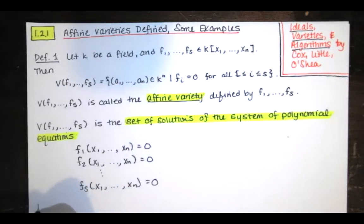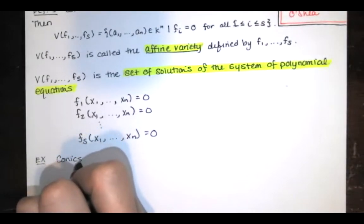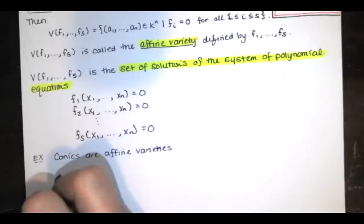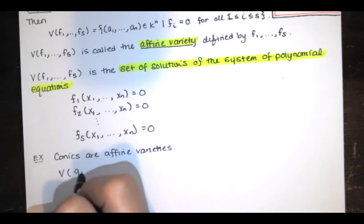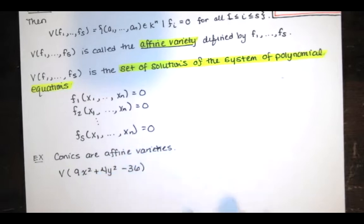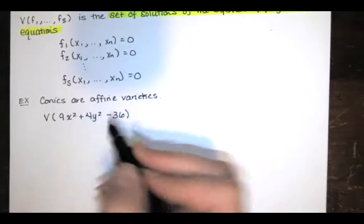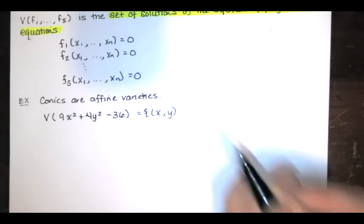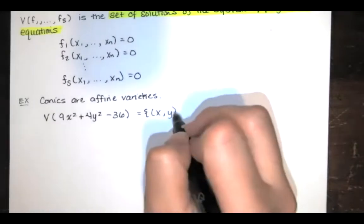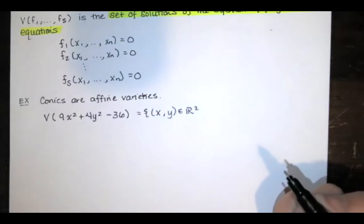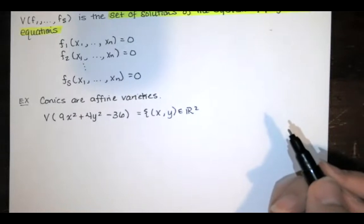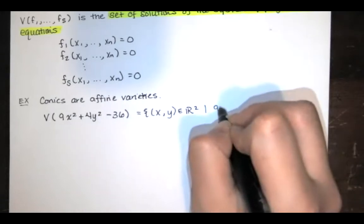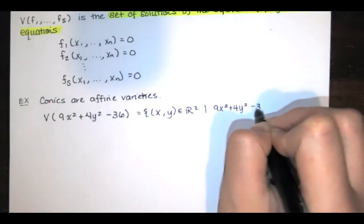All conic sections are affine varieties. For example, V of 9x squared plus 4y squared minus 36 is a subset of two-dimensional space. With x and y as our only variables, in two-dimensional affine space over the real numbers, this is the set of all points x, y in the xy-plane such that this polynomial equals zero. It's a polynomial in two variables set equal to zero.